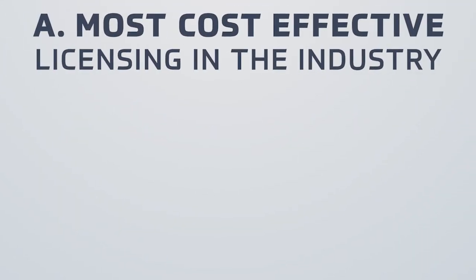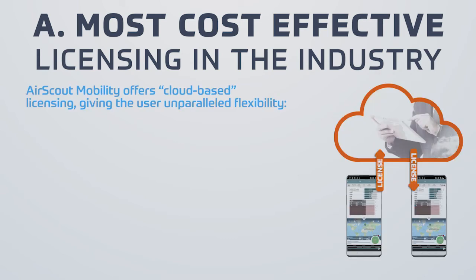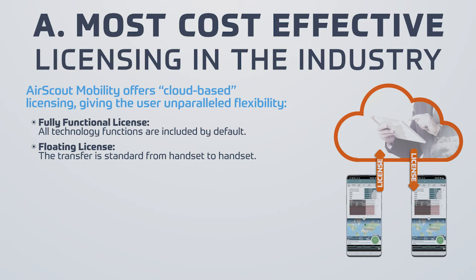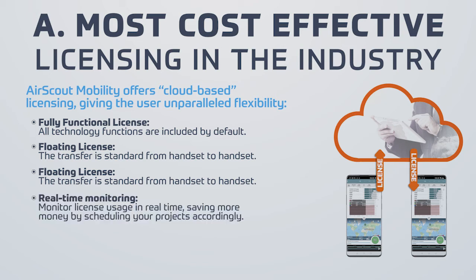AirScout Mobility offers cloud-based licensing, giving the user unparalleled flexibility. The fully functional license gives the user all the technology functionalities that are included by default. It is a floating license and the transfer is standard from handset to handset. There's a flexible term, meaning you can purchase licenses by the year, month, week, or day. Perpetual licenses are also available. It has real-time monitoring, which means you can monitor your license in real time, saving you more money by scheduling projects accordingly.